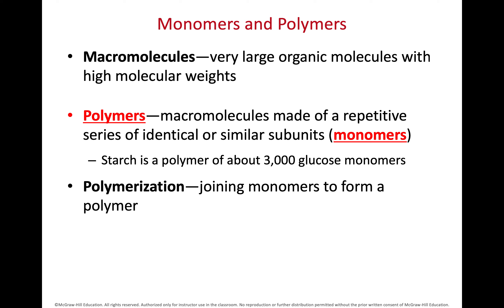When we look at these biomolecules, they're going to be polymers in our bodies, generally speaking. These macromolecules are really large and have incredibly high molecular weights. We categorize them as a polymer — poly meaning many, mer for subunit. There are many subunits going together to make these macromolecules. The subunits are called monomers; a one subunit piece is a monomer.